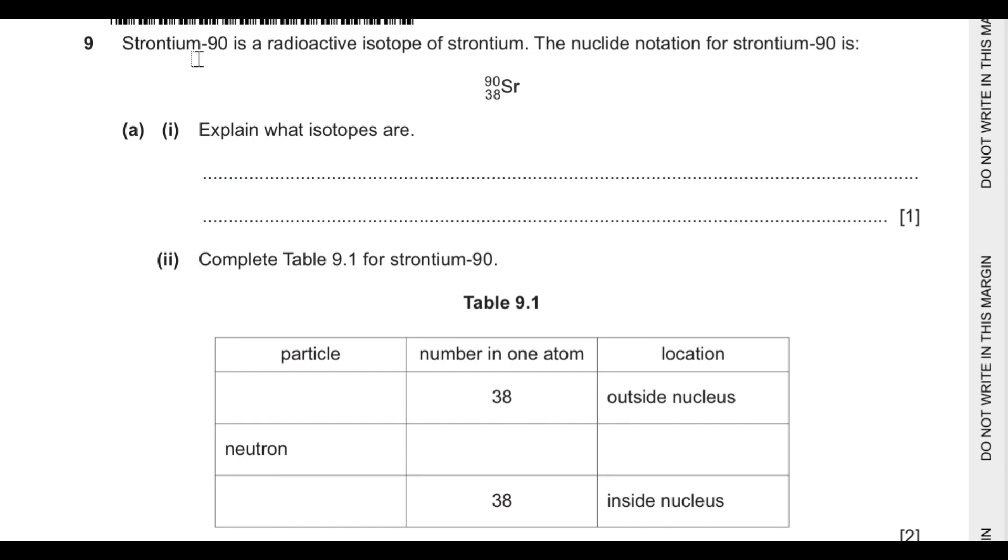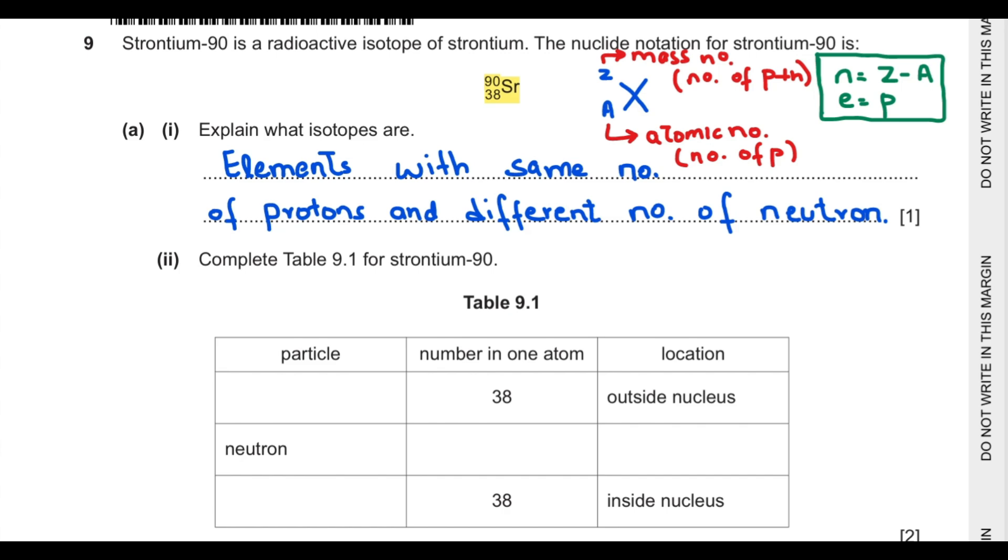Ninth question says strontium-90 is a radioactive isotope of strontium. Part A says explain what is an isotope. To represent any atom, we write atomic number which represents the number of protons in a neutral atom. Mass number or nucleon number represents the number of protons and neutrons in an atom. To get number of neutrons only, we subtract atomic number from mass number. Number of electrons equals number of protons in a neutral atom. We define isotopes as elements having same number of protons and different number of neutrons.